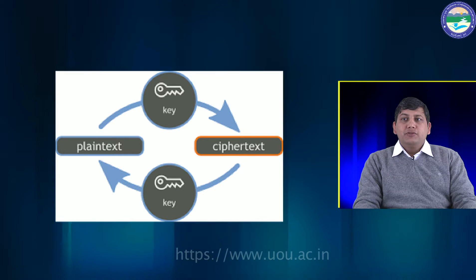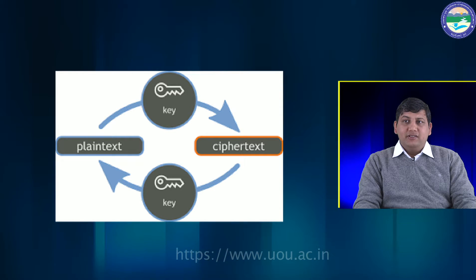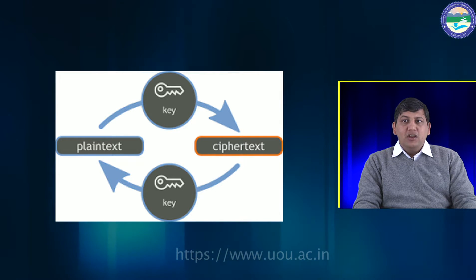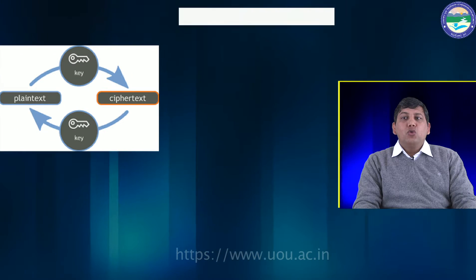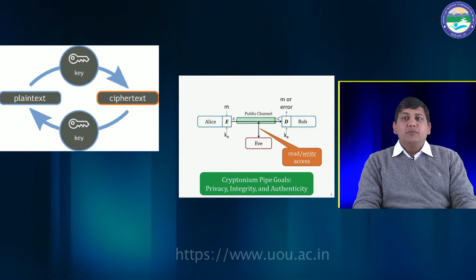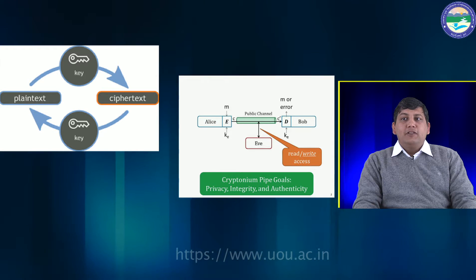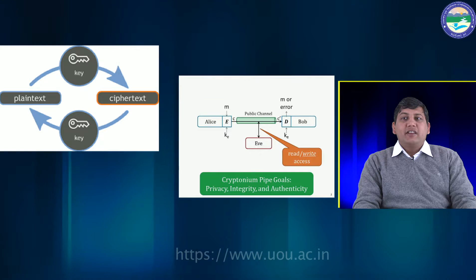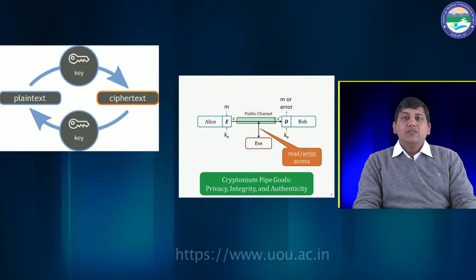Now we will discuss how this encryption system works. Suppose Alice encrypts her plaintext message, represented by M, using an encryption key represented by KE, and the outcome is ciphertext. This ciphertext goes through the public medium. If Eve tries to eavesdrop the message, Eve will get the ciphertext C. At the end of the public forum comes out another ciphertext C dash, which we hope is equal to C.